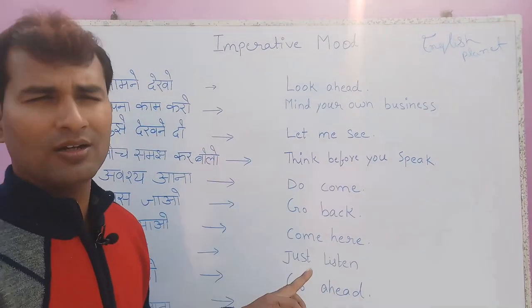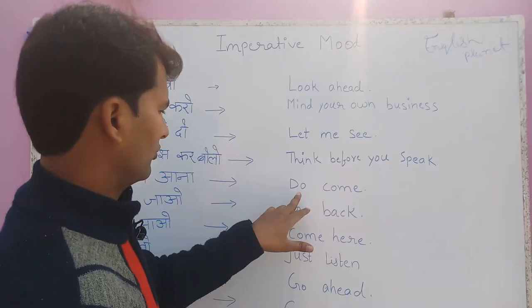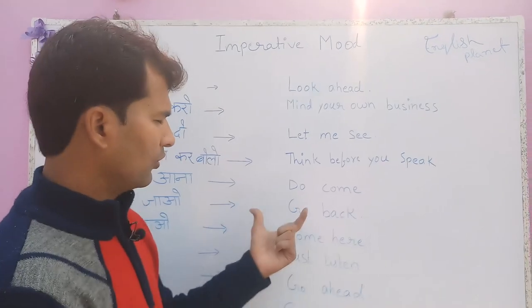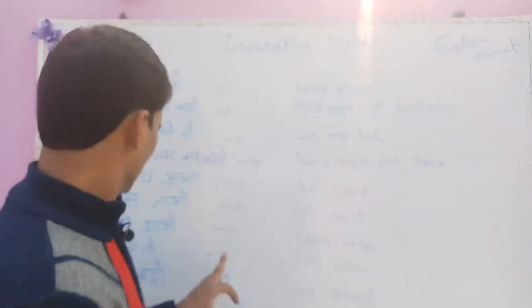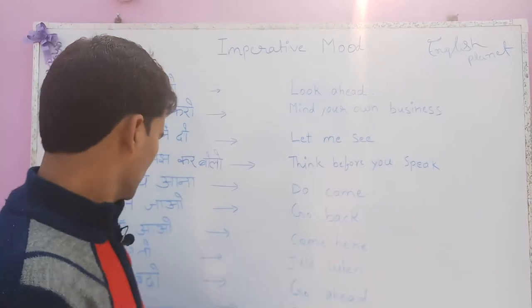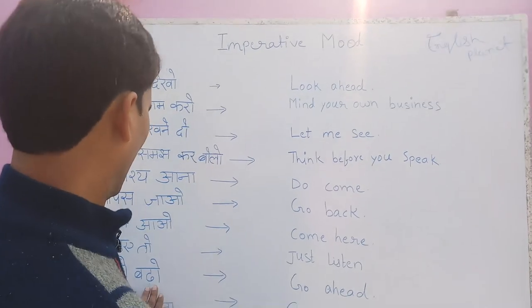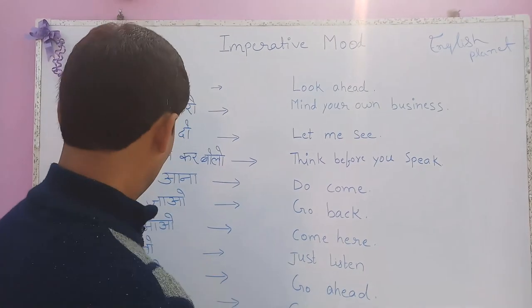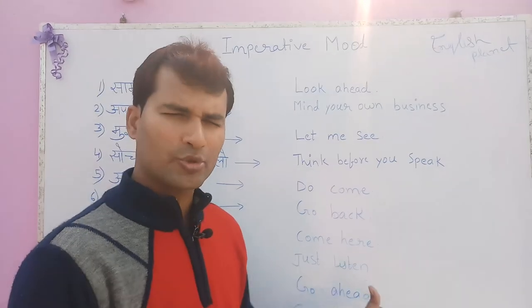We say 'Avashya' — 'Do come.' 'Vaapas jao' — 'Go back.' 'Yahan ao' — 'Come here.' 'Suniye to' — 'Just listen.' 'Aage badho' — 'Go ahead.' 'Jaldi aana' — 'Come soon.'